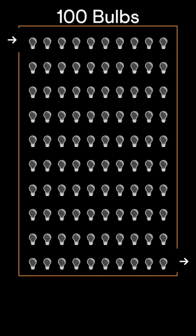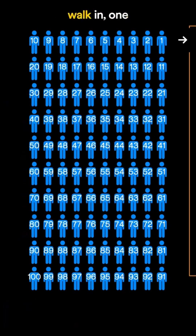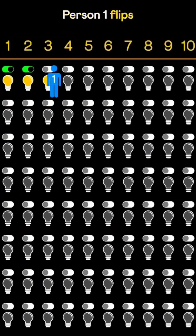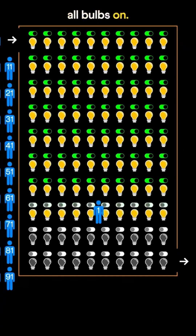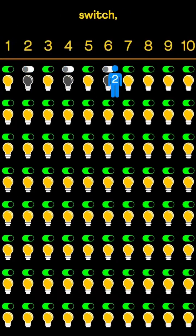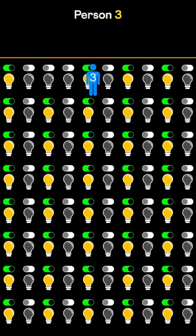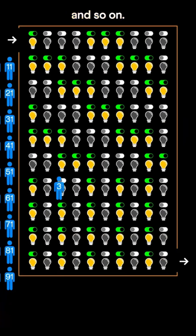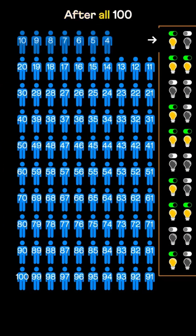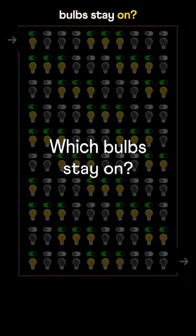Here's a puzzle. A room has 100 bulbs, each with a switch, all turned off. Then 100 people walk in one by one. Person 1 flips every switch, turning all bulbs on. Person 2 flips every second switch, turning off even numbered bulbs. Person 3 flips every third switch, and so on. After all 100 people have taken their turn, which bulbs stay on?